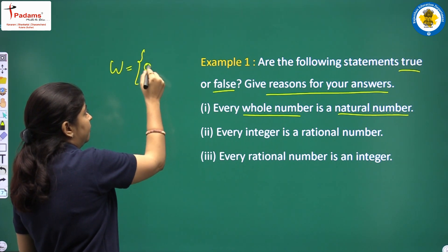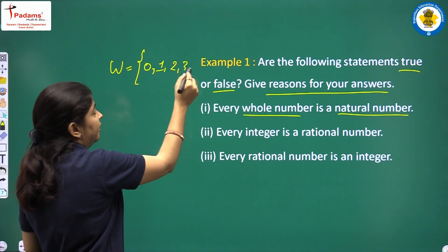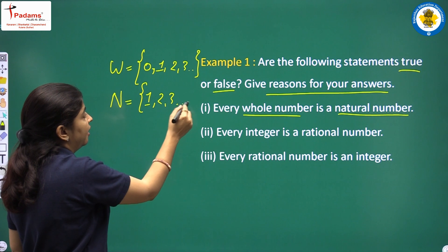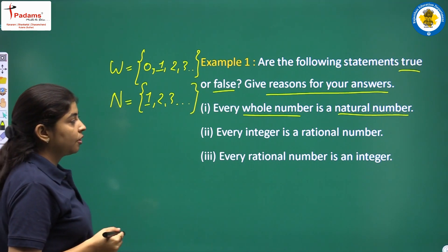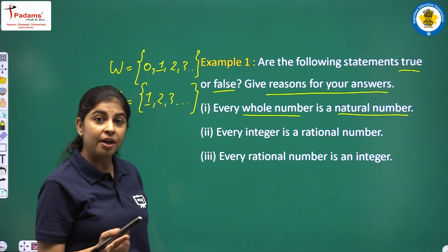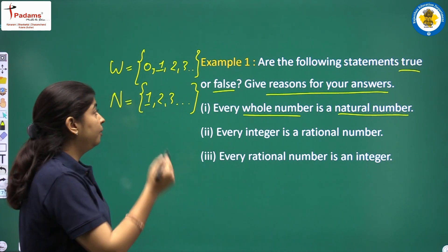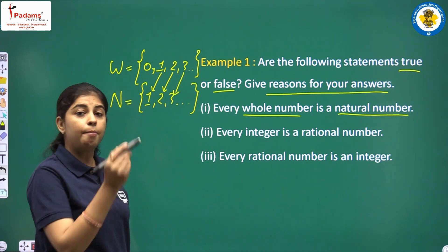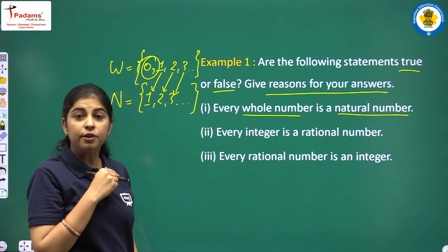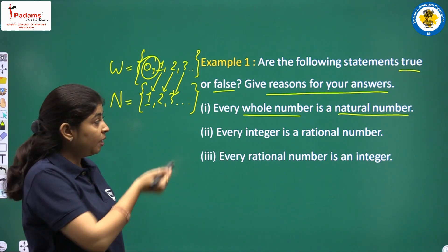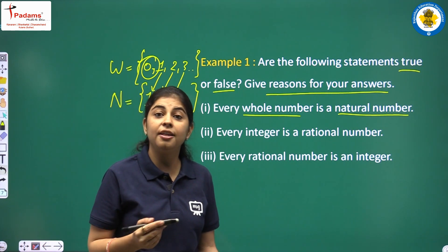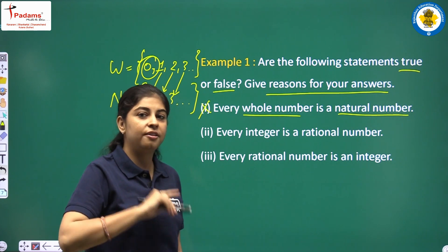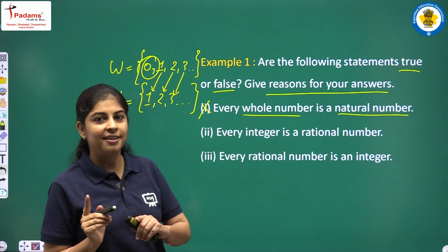First statement: Every whole number is a natural number. Recall: whole numbers are 0, 1, 2, 3... and natural numbers are 1, 2, 3... Now, 1, 2, 3 are natural numbers, but what about 0? 0 is not a natural number. So this statement is false — every whole number is NOT a natural number because 0 is a whole number but not a natural number.